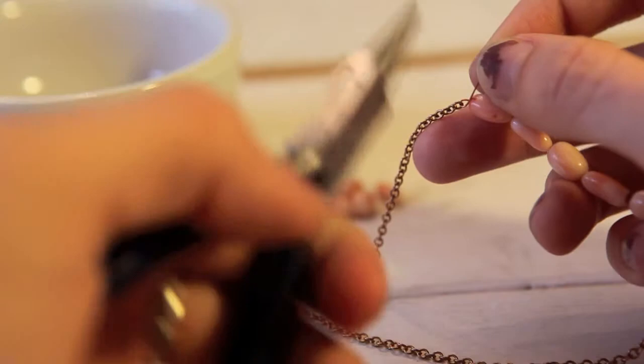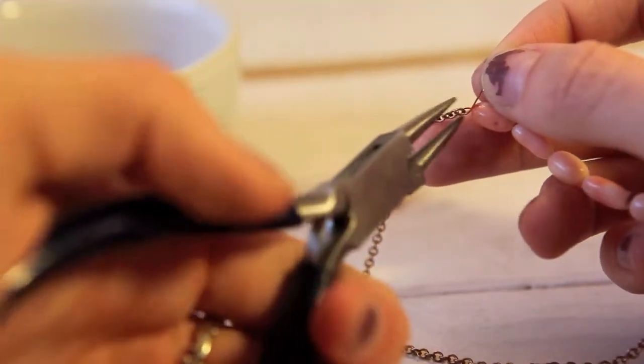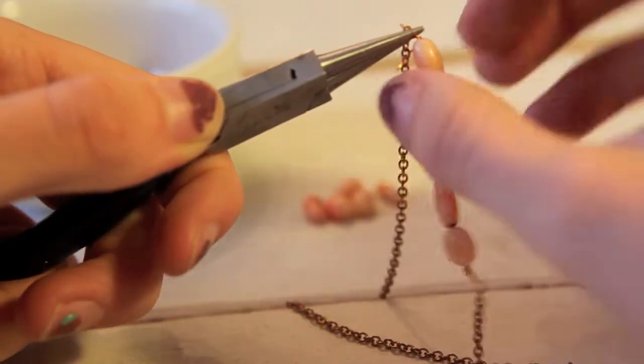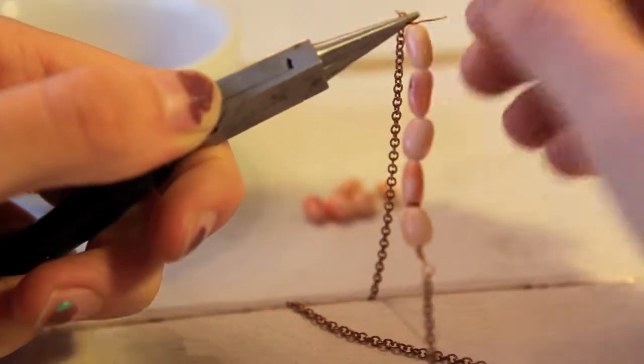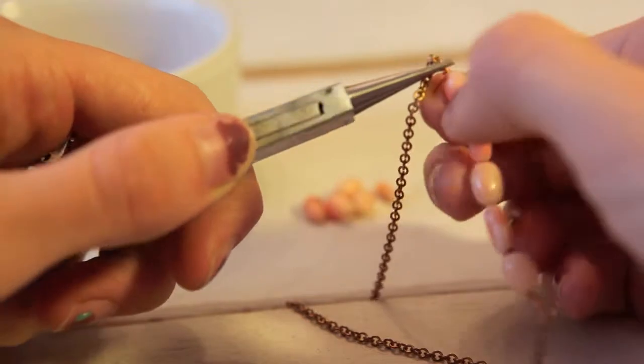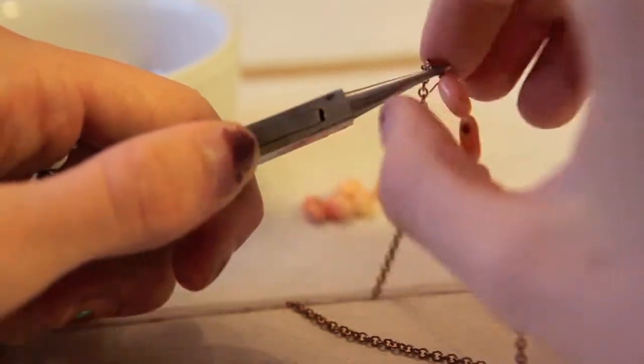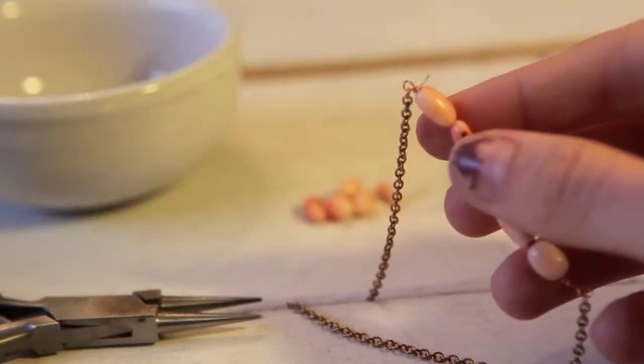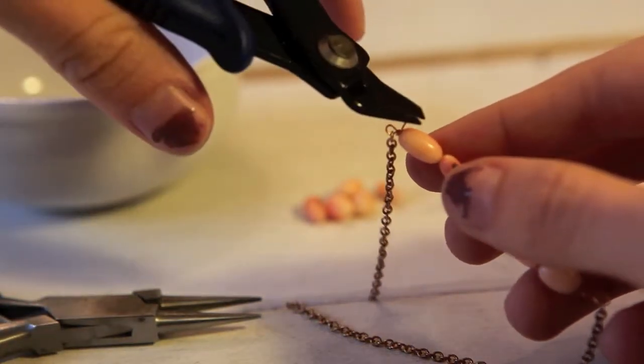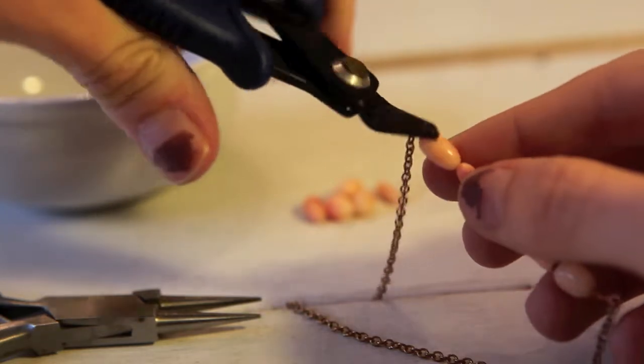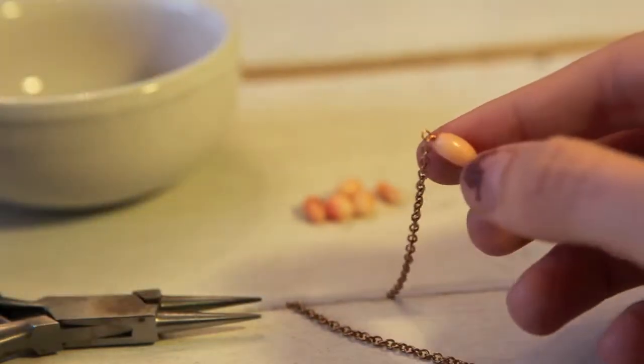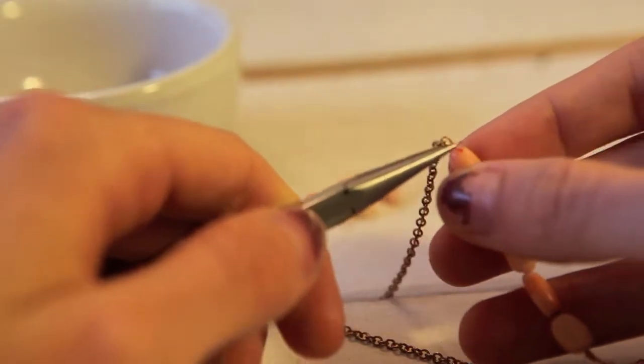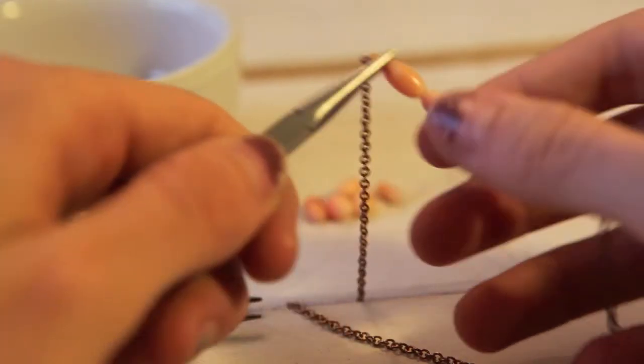Use the round nose pliers to hold the second loop down then coil the short piece of wire around. Use the wire cutters to cut off the excess wire and use the flat nose pliers to flatten down the little piece of excess wire.